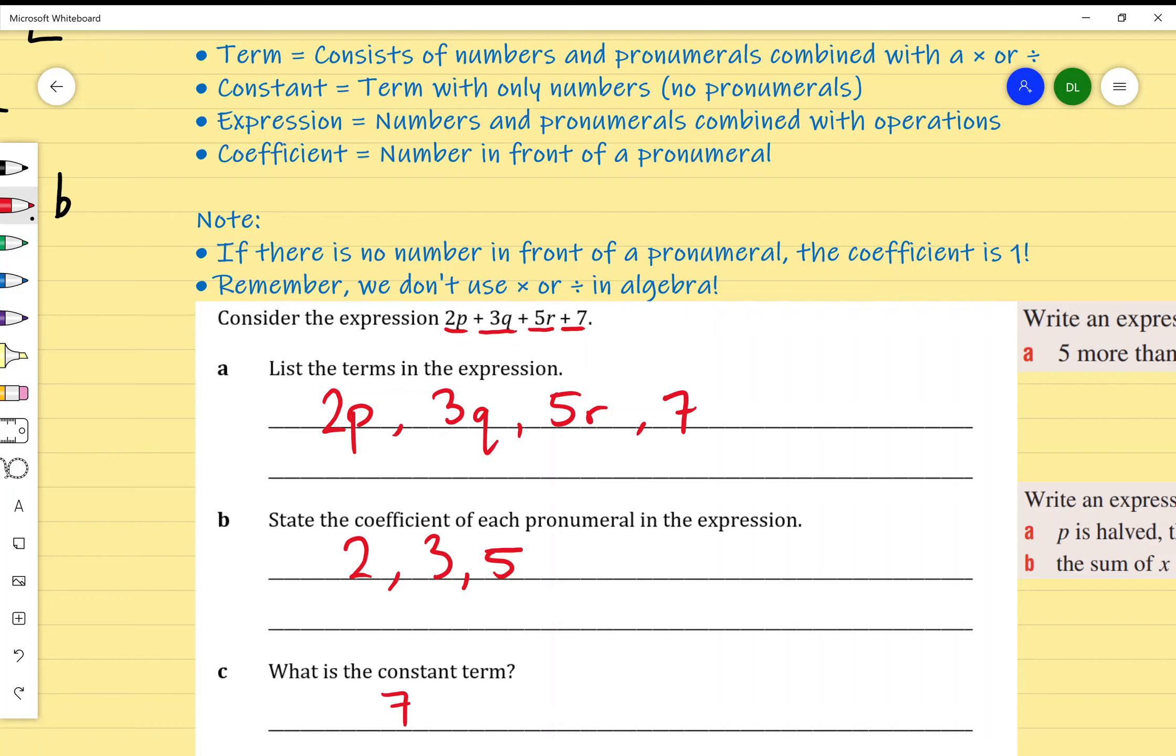Last thing to note for the content is that if there is no number in front of a pronumeral, for example if I've just got y, the coefficient is 1. Y is the same as 1y. We don't have to write it, but the coefficient is 1. That's for future reference if a question asks what the coefficient is and you're given something like that.